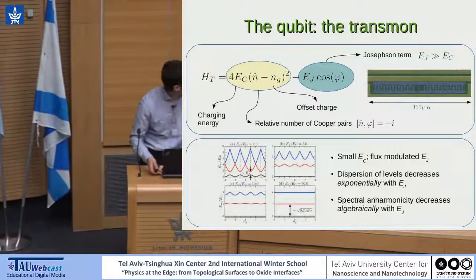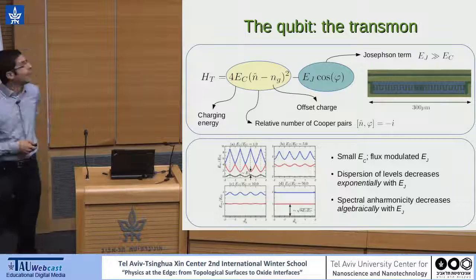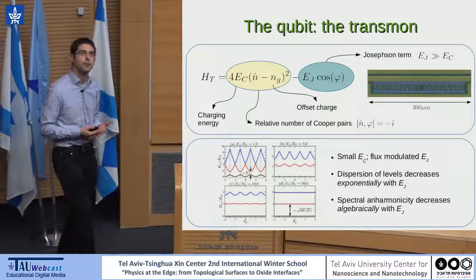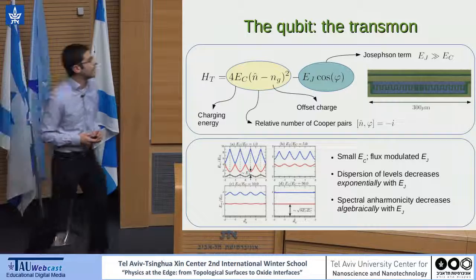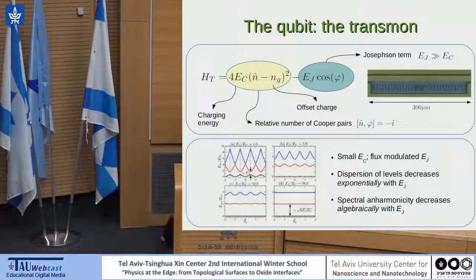When I say state-of-the-art hardware, I'm thinking about the transmon qubit, which is one of the most promising qubits. It's just a mesoscopic Josephson junction. The main engineering breakthrough was to realize a device in which the Josephson energy is much larger than the charging energy.